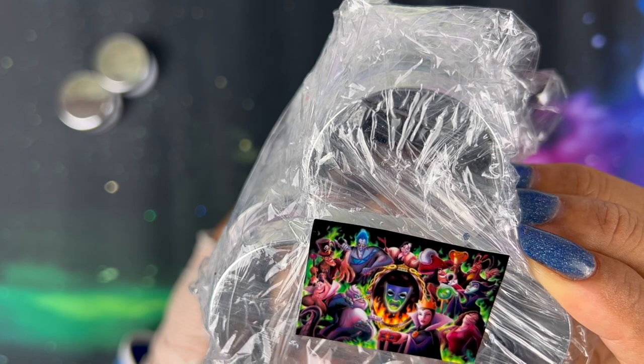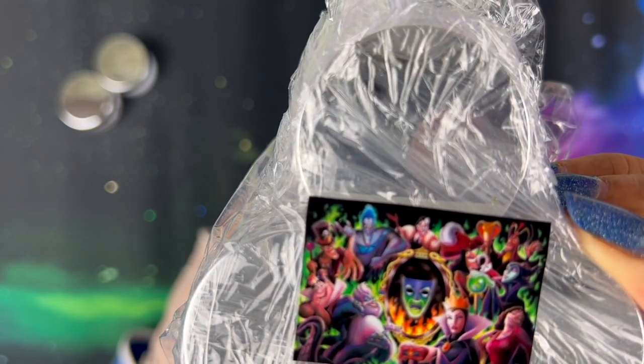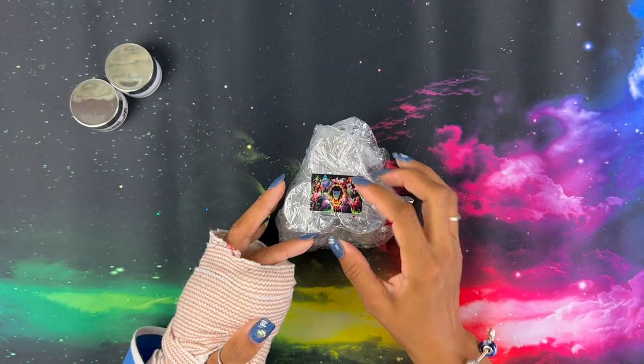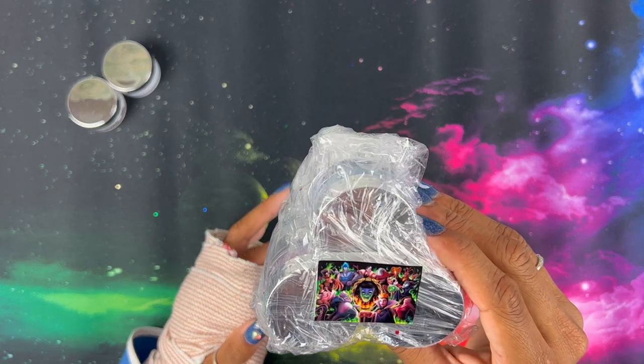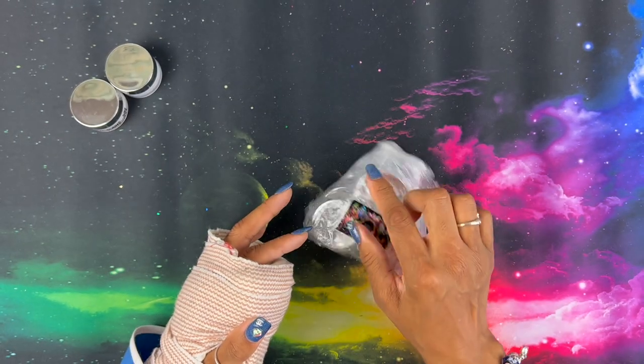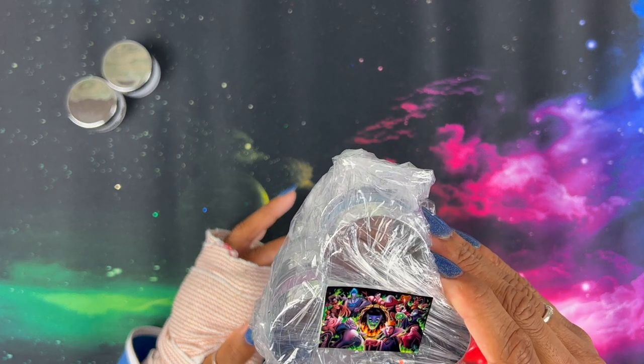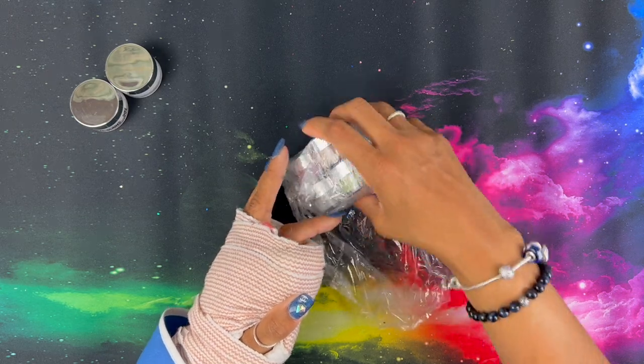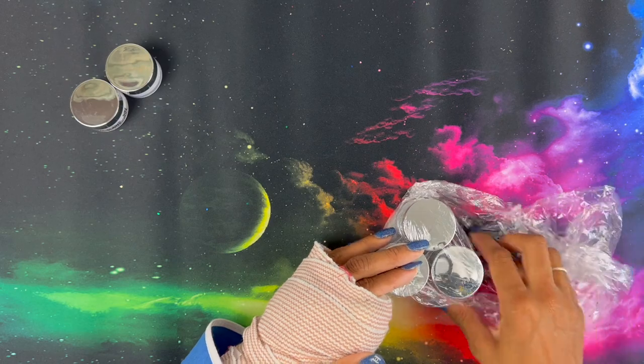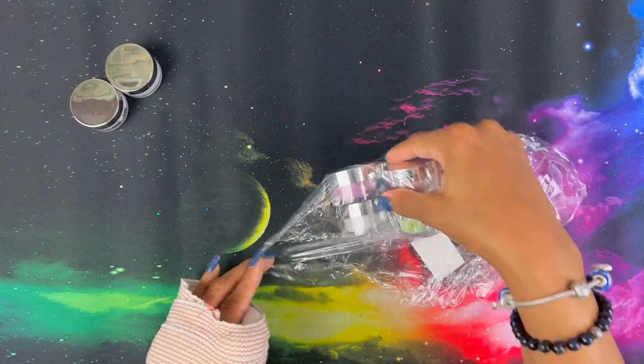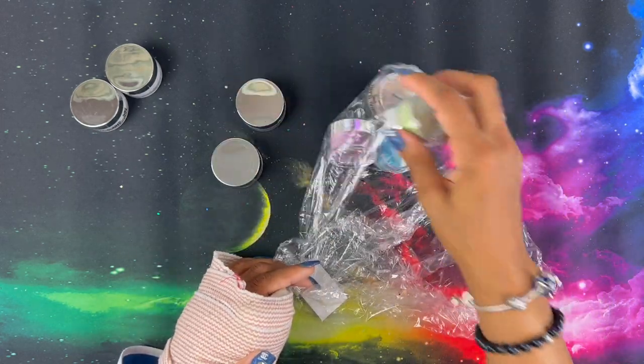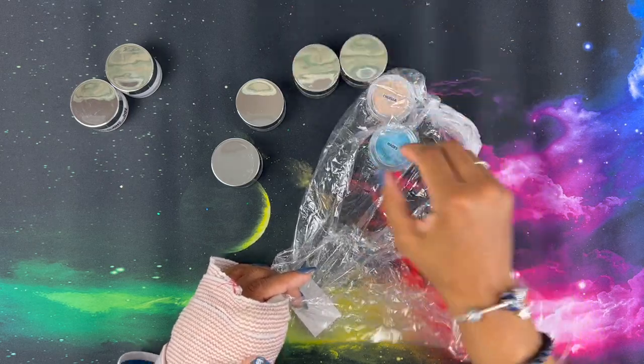Villains Collection. Oh my gosh, look at this. From Hercules, 100 Dalmatians. We have so much from Princess and the Frog, this is amazing. Ursula. Sleeping Beauty. I'm so excited.